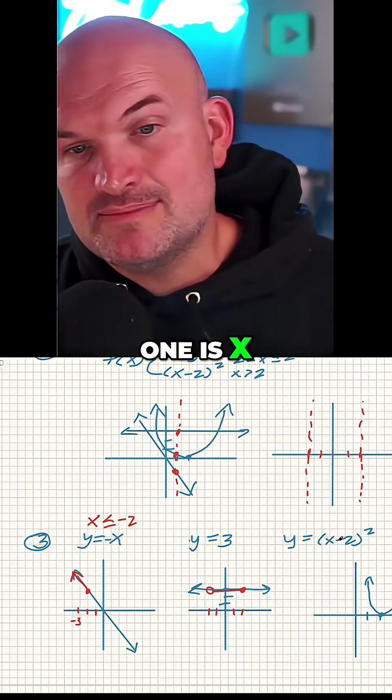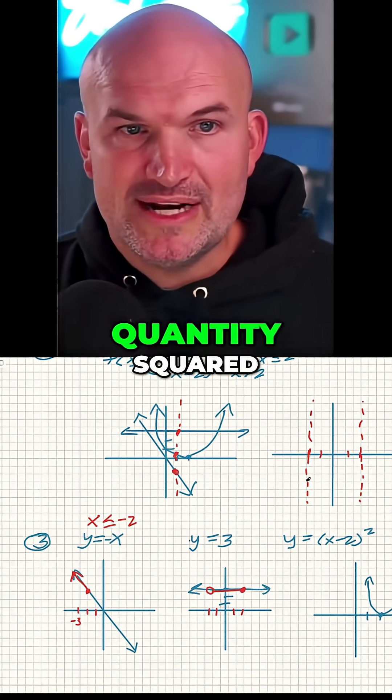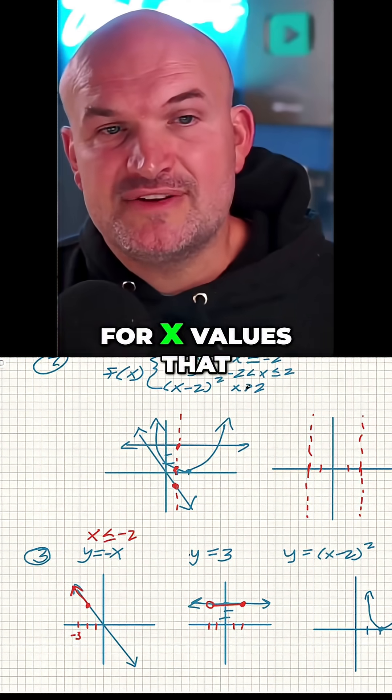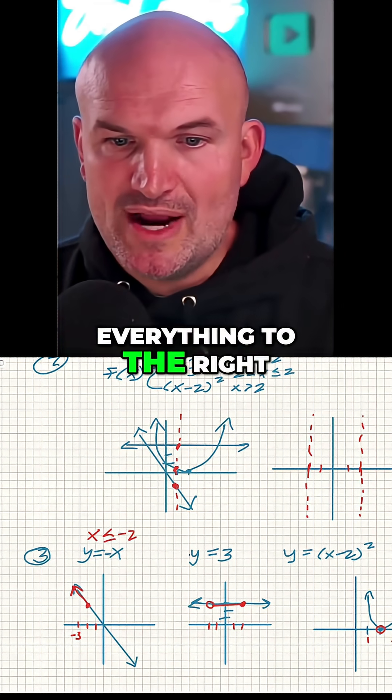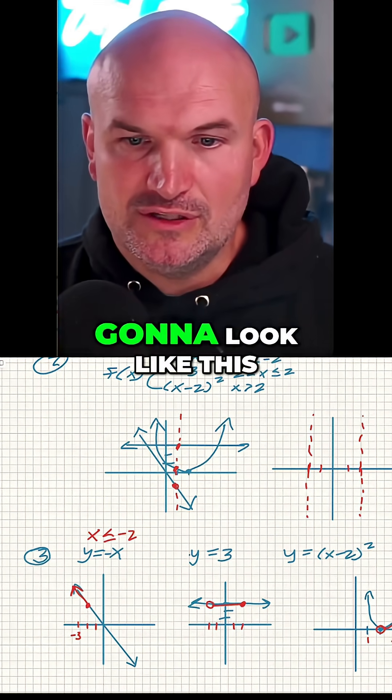And then the third one is x minus two quantity squared, but that's only defined for x values that are greater than two. So for x values that are greater than two, it's going to be everything to the right over here. So this graph is going to look like this.